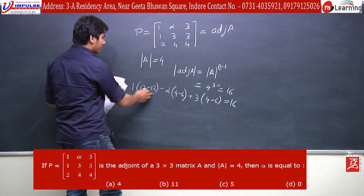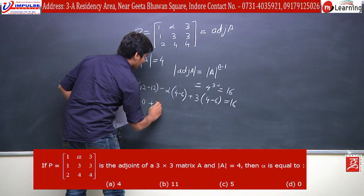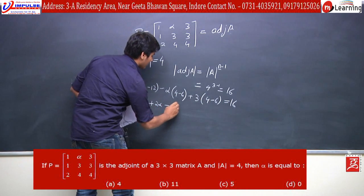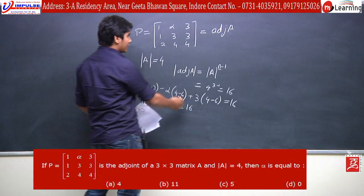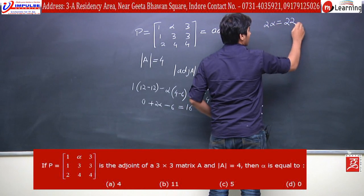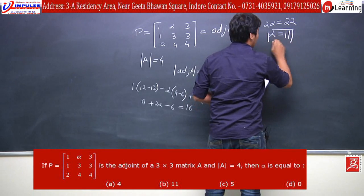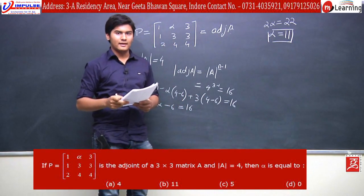Here we solve it. This value is 0, this is 2 alpha and this is minus 6. 2 alpha minus 6 is equal to 16. Here we know that 2 alpha is equal to 22, so the value of alpha is equal to 11, which is the right answer.